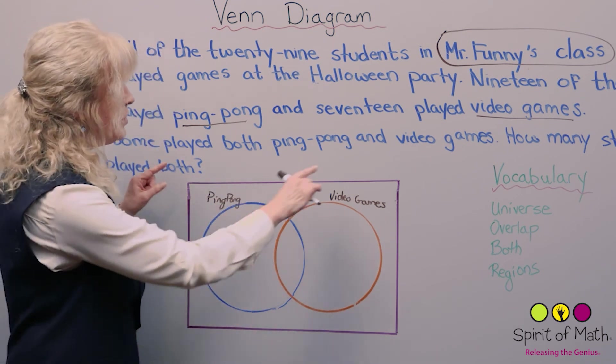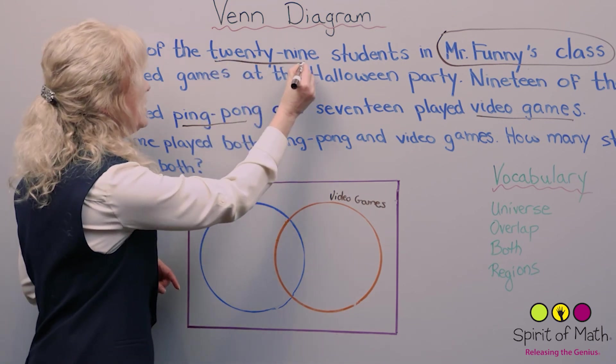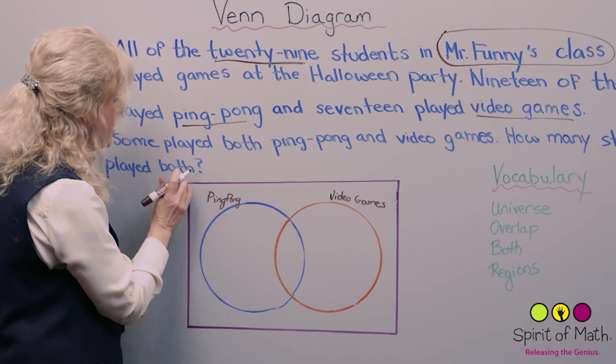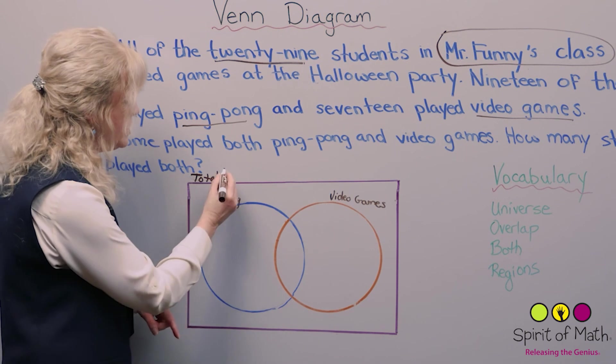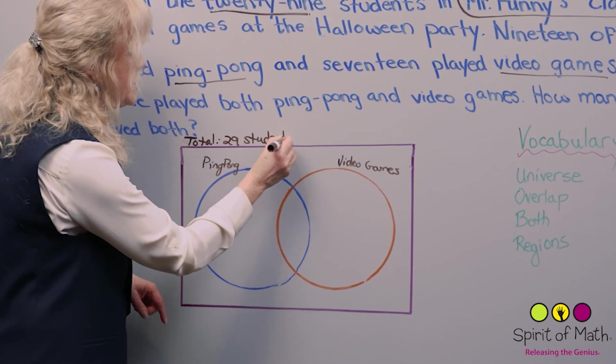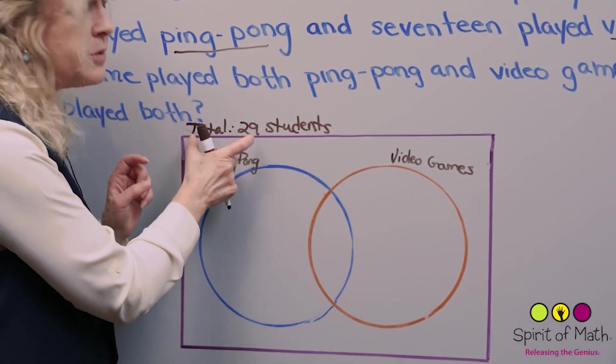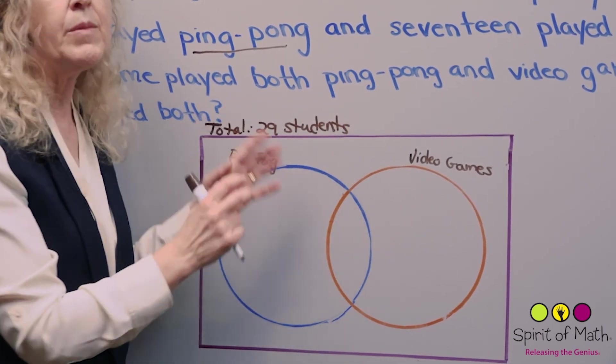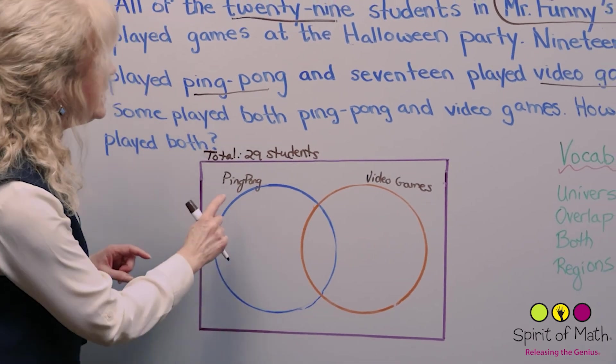Now we've got the universe and let's put the numbers in. For the universe, there were 29 students. I'm going to put total up here. This is where the total always goes because that's the total of the universe, and that was 29 students. You label that. You don't necessarily have to put all of this. You could just put 29 students in there or you could just even put total. Somehow there has to be an indication of what's in this universe.